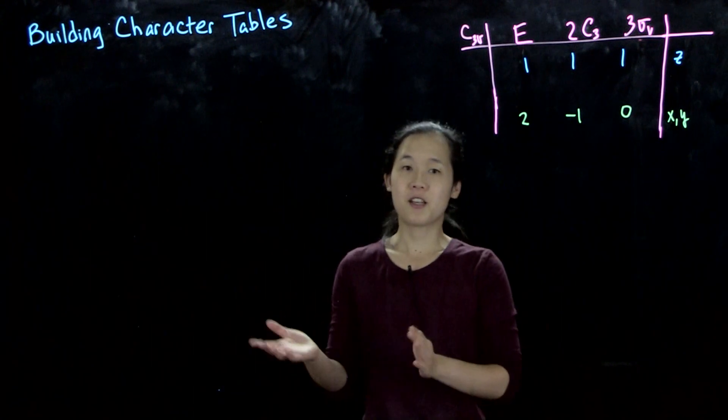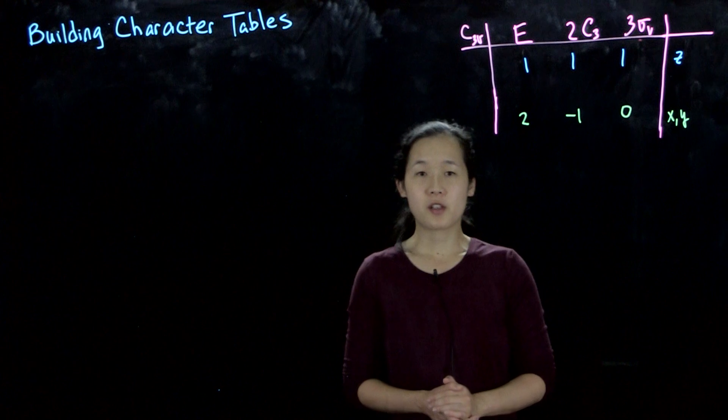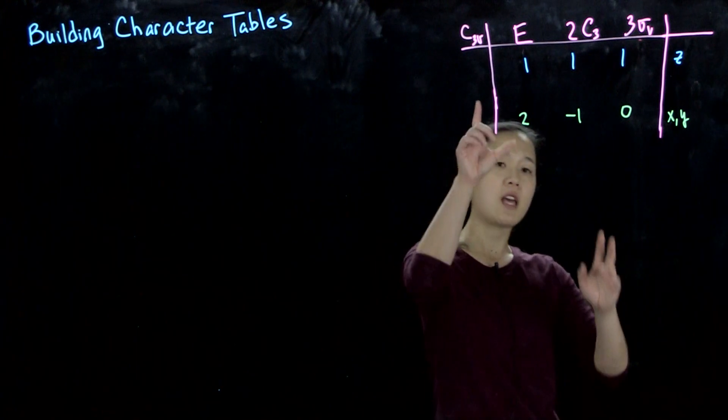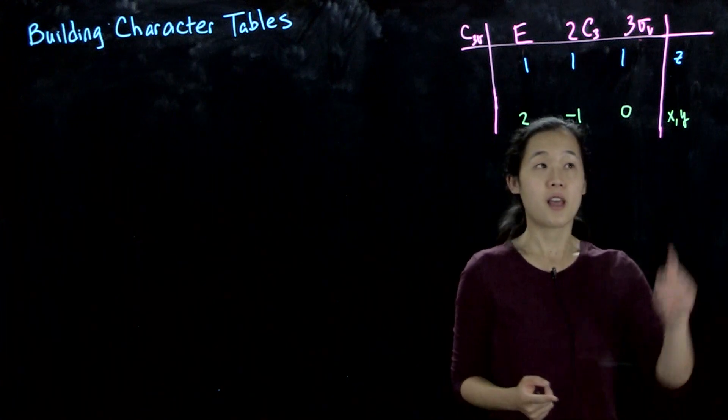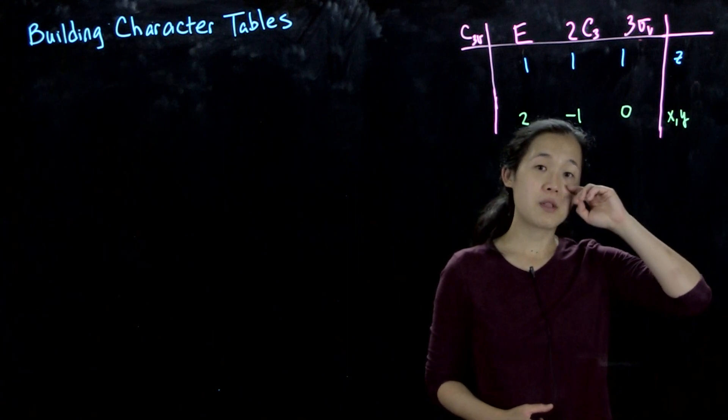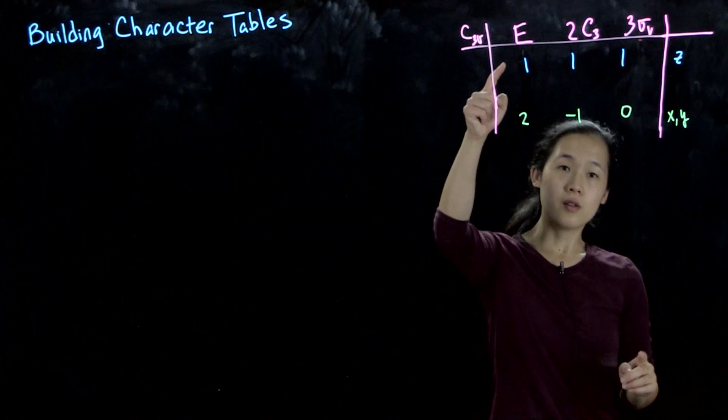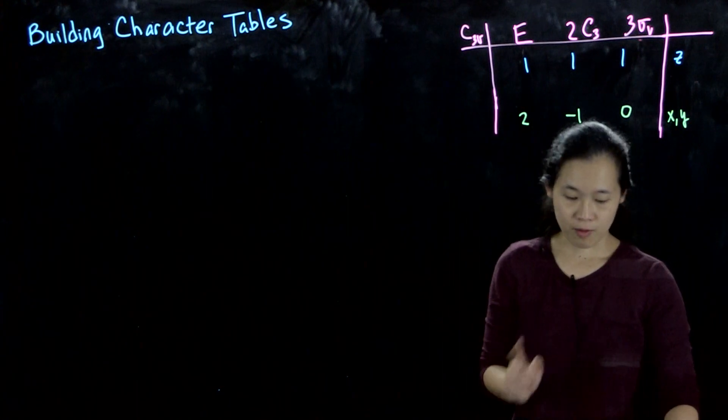Okay, so last class, or last video rather, we were able to show that once we had the matrices for the different symmetry operations using the x, y, z basis, we were able to break it down into two different irreducible representations.